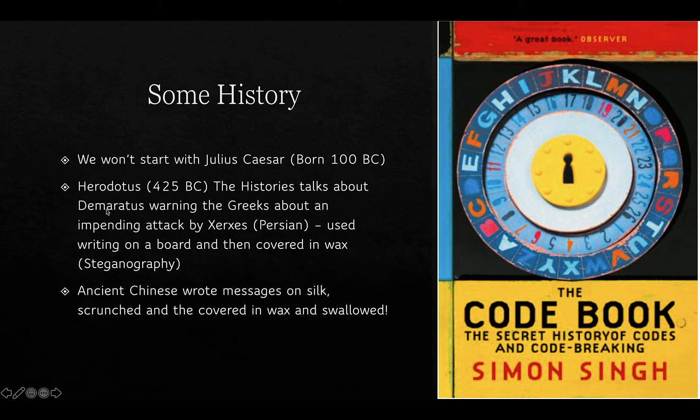First, some history. We're not going to start with Julius Caesar, although that's the first cipher we'll consider — he was born in 100 BC. Turning to the Greeks first: Herodotus, writing in 425 BC in his book The Histories, talks about a Greek called Demaritus who was exiled to Persia and wanted to warn his fellow Greeks.